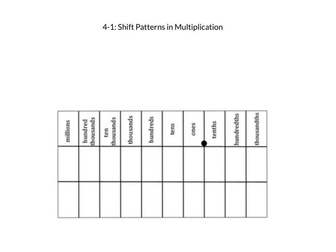Let's look at another example. This time I'm going to start with a decimal number: 3 and 62 hundredths. If we multiply 3 and 62 hundredths by 100, since 100 is just a multiple of 10, the digits in 3 and 62 hundredths won't change — they will shift to the left as many multiples of 10 as we have. We have two multiples of 10, and I know that because there are two zeros. 100 is 10 times 10 — another way to think about it.